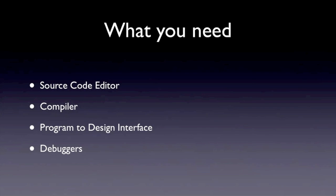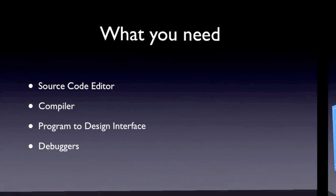First of all, what you need. You'll need a source code editor, a compiler to compile your code once you type it and make it into a program. Also, when you're doing programs with an interface, which is pretty much everything now, you need a program to design the interface and you need debugger programs that help you find flaws in your program. Because if you only have one semicolon off, it can mess up parts of the program.